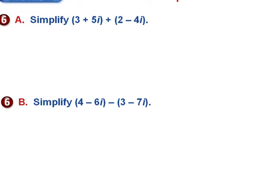Now let's use these in operations — addition and subtraction of complex numbers. For addition, just like matching real parts in equations, I add the real parts together: 3 plus 2 equals 5. Then I collect the imaginary parts: 5i plus negative 4i equals positive i. So the new complex number is 5 plus i — real part and imaginary part.